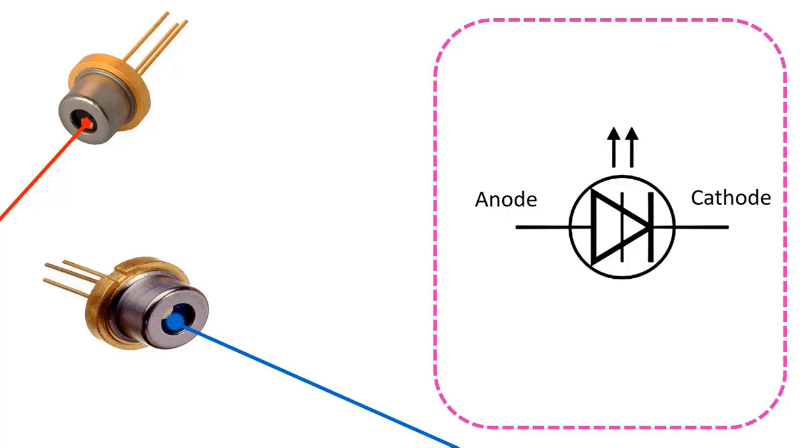However, laser lights do not scatter, and they have features such as directionality. Its symbol is like this, and is drawn with arrows on the diode symbol, showing that it emits light. It is shown as three pins in the figure. A pin is common.